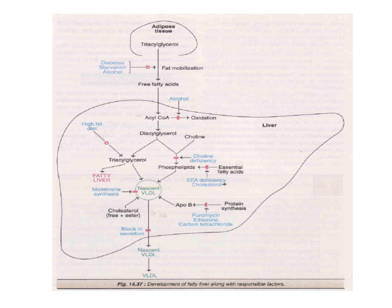Acyl-CoA is converted into diacylglycerol; diacylglycerol using choline is converted into phospholipid, but this synthesis of phospholipid is inhibited by choline deficiency. Essential fatty acids also form phospholipid, but essential fatty acid deficiency or excess cholesterol will inhibit phospholipid synthesis. Diacylglycerol is also converted into triacylglycerol, and a high fat diet will increase the formation of triacylglycerol, ultimately leading to fatty liver. This converts into nascent VLDL, which is promoted by cholesterol; if there is a blockage of its excretion, it leads to lipoprotein deposition in the body.